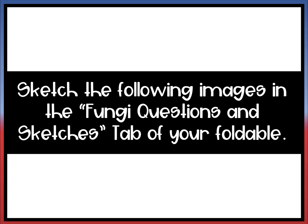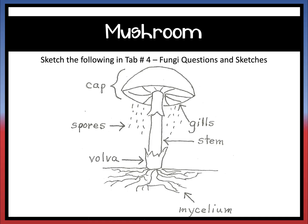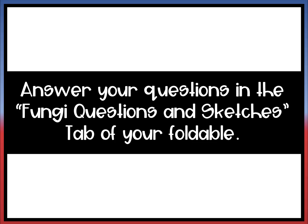Now you're going to sketch the following images in the fungi questions and sketches tab of your foldable, which is tab number four. You're welcome to pause the video and sketch them or pull up the PowerPoint on your screen. The first image to sketch is the mushroom, the next is the bread mold, and then go ahead and answer your questions in the fungi questions and sketches tab of your foldable.